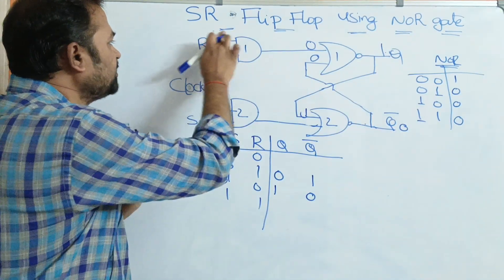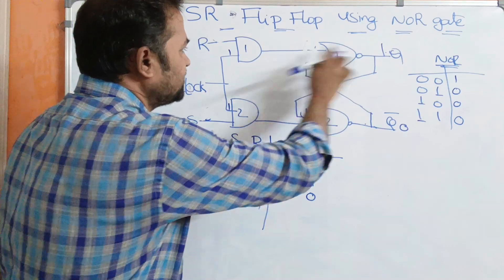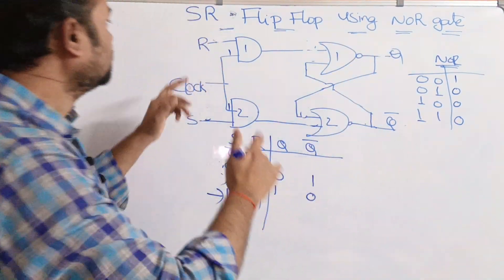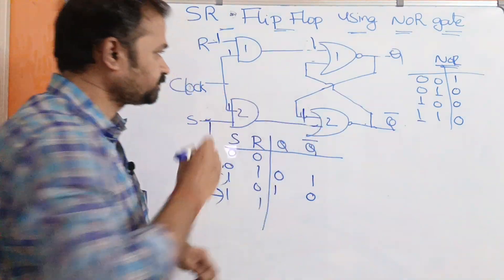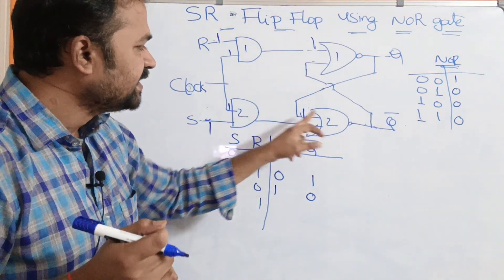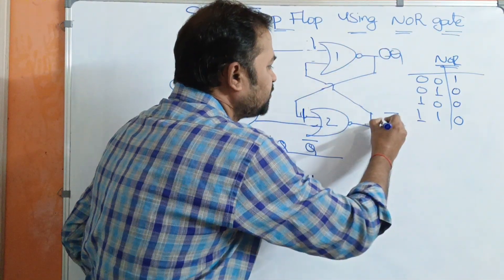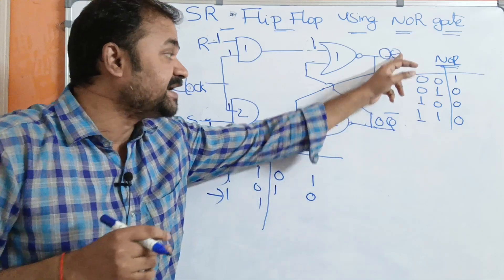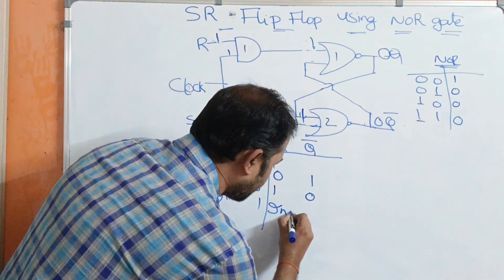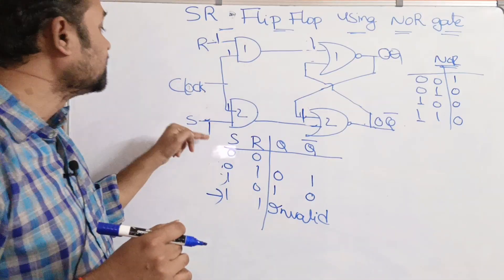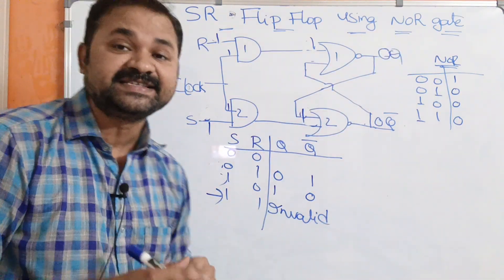Next let us analyze the 1, 1 combination. S value is 1 and R value is 1. The AND gates produce output 1 for both. The first NOR gate accepts 1 as input and the second NOR gate also accepts 1 as input. Since one of the inputs is 1, both NOR gates output 0. So Q value is 0 and Q bar value is 0. But this situation won't arise — because the outputs should always be complemented to each other. So we can say that this is an invalid combination. We never use the 1,1 combination because we are getting 0,0 as the outputs, which are not complementing each other.